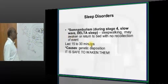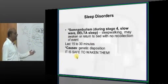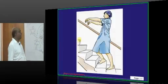The slow wave sleep, which is the delta sleep, has a genetic predisposition.